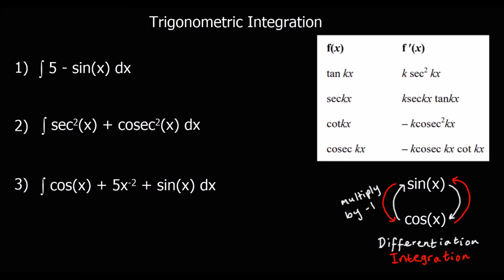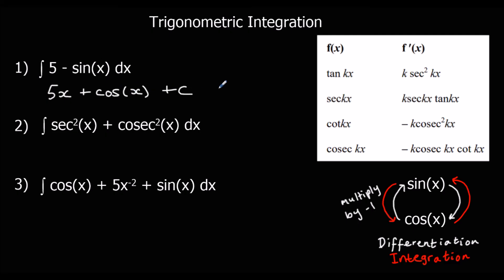OK, three more questions — pause the video, give them a go, and then press play when you're ready to go through the answers. The first one: for the constant 5, add 1 to the power and divide by the new power, so that's just 5x. Negative sin x integrated becomes cos x when multiplied by negative 1, plus c.